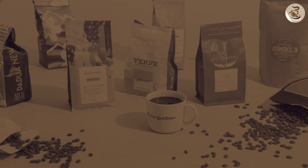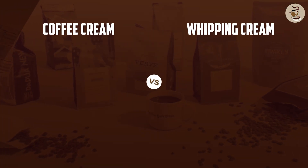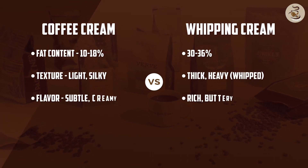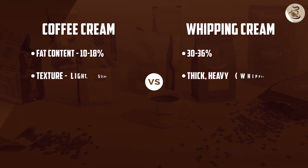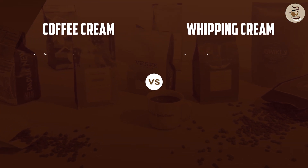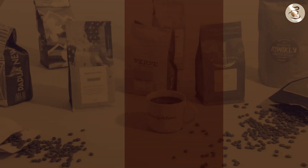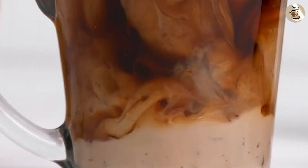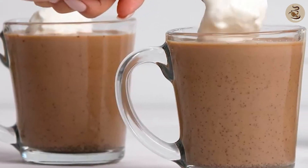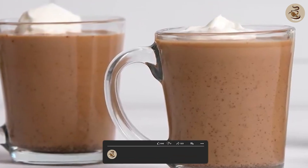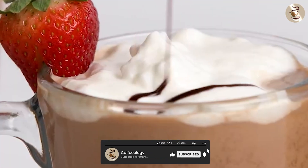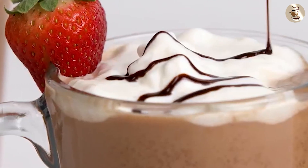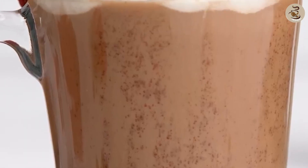Overall, both coffee cream and whipping cream have their own unique uses and characteristics. Coffee cream is best used for coffee and coffee-based drinks, while whipping cream is ideal for desserts and baked goods. Understanding the differences between these two types of cream can help you choose the right cream for your specific needs. So the next time you're in the grocery store or ordering a coffee, take a moment to consider which type of cream will be best for you. Thanks for watching and we'll see you in the next video.